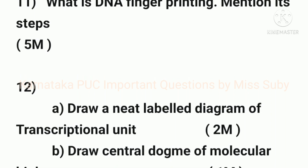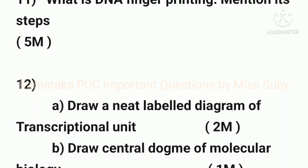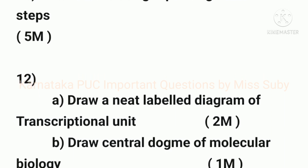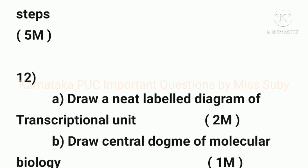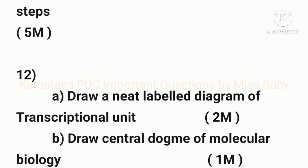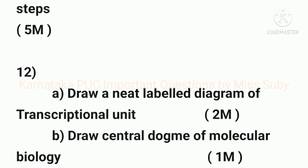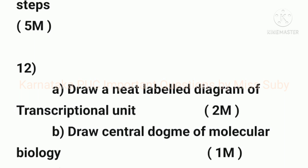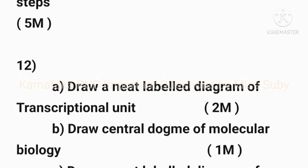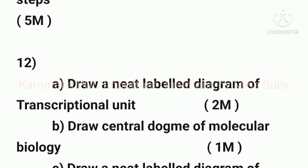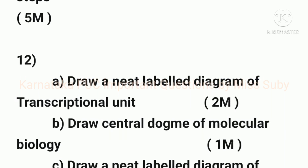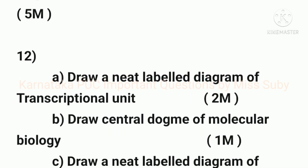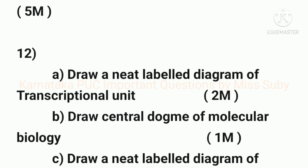The next five mark question is split into three parts: one two mark question, one one mark question, and one two mark question. The first part is: draw a neat labeled diagram of a transcriptional unit — it carries two marks.